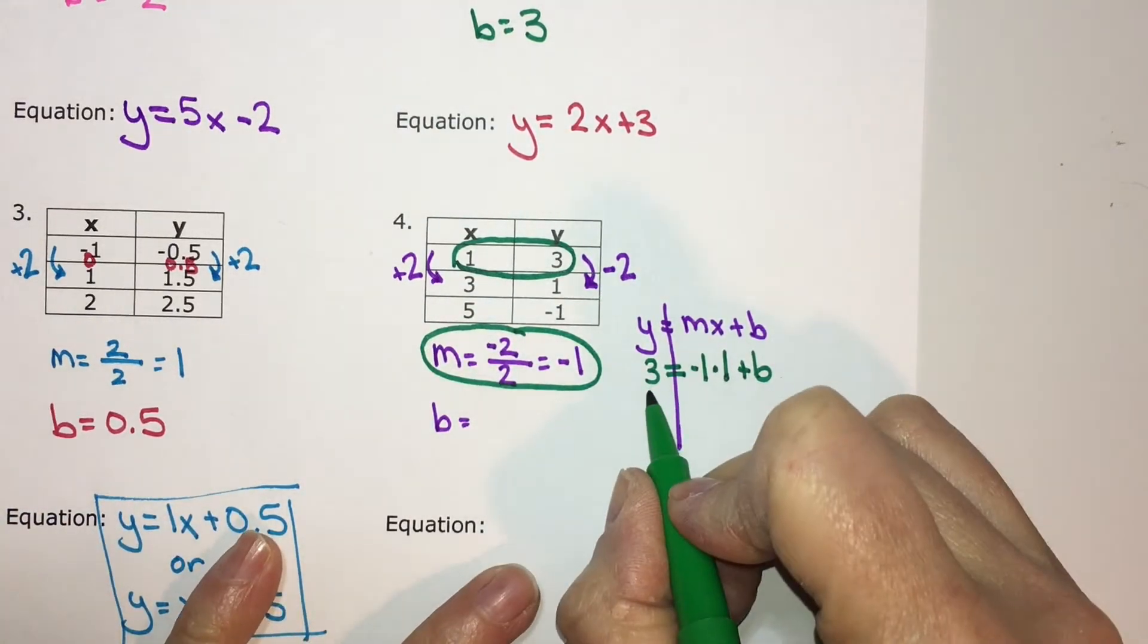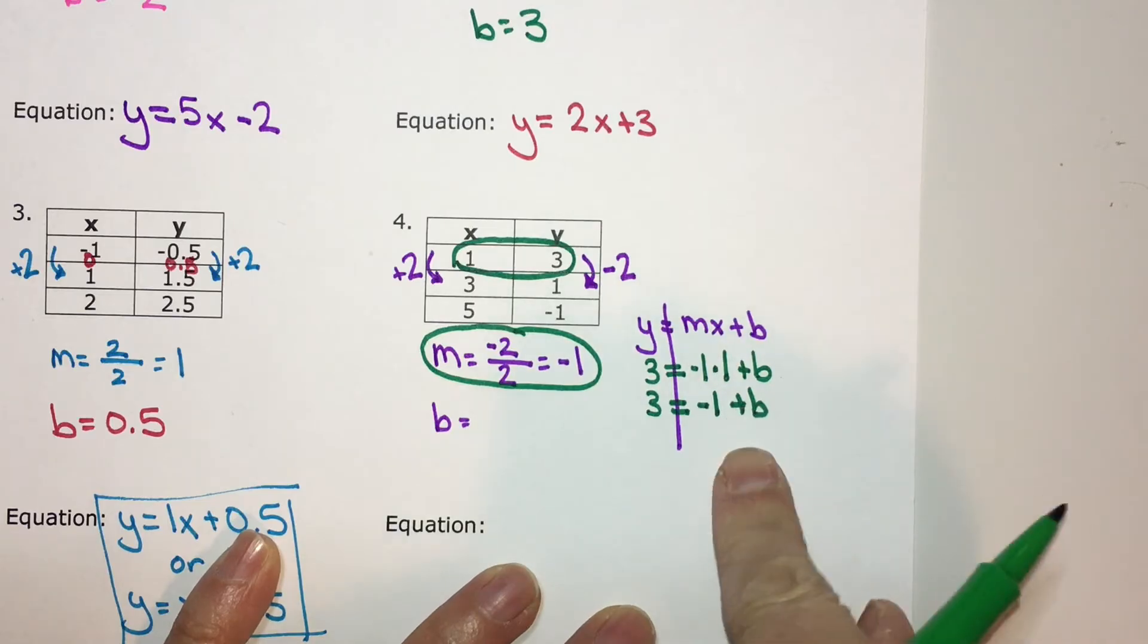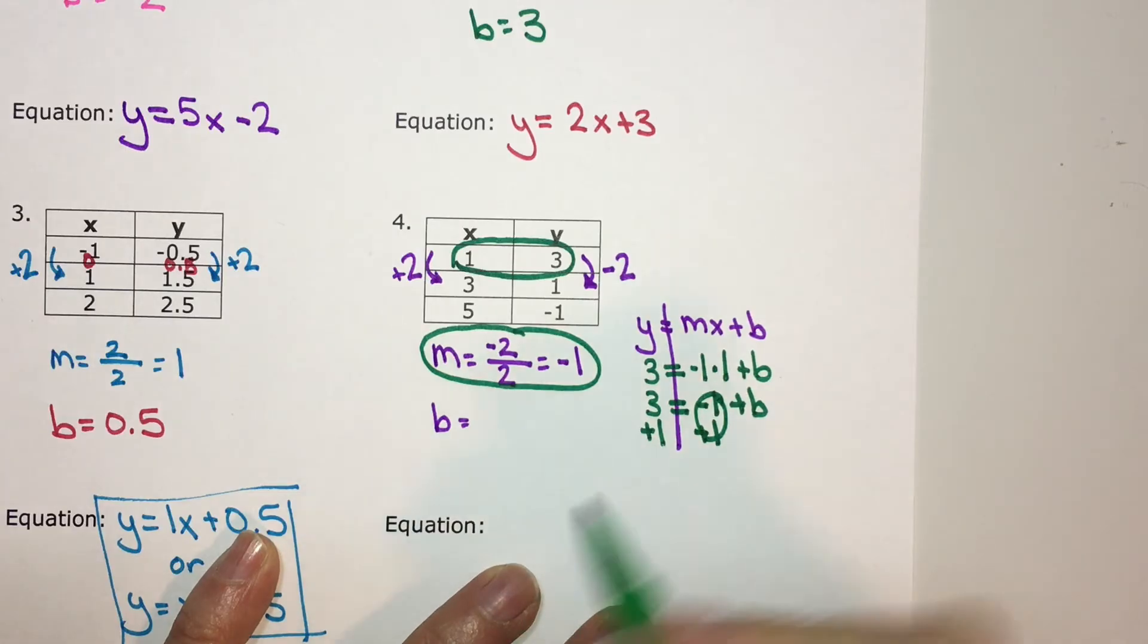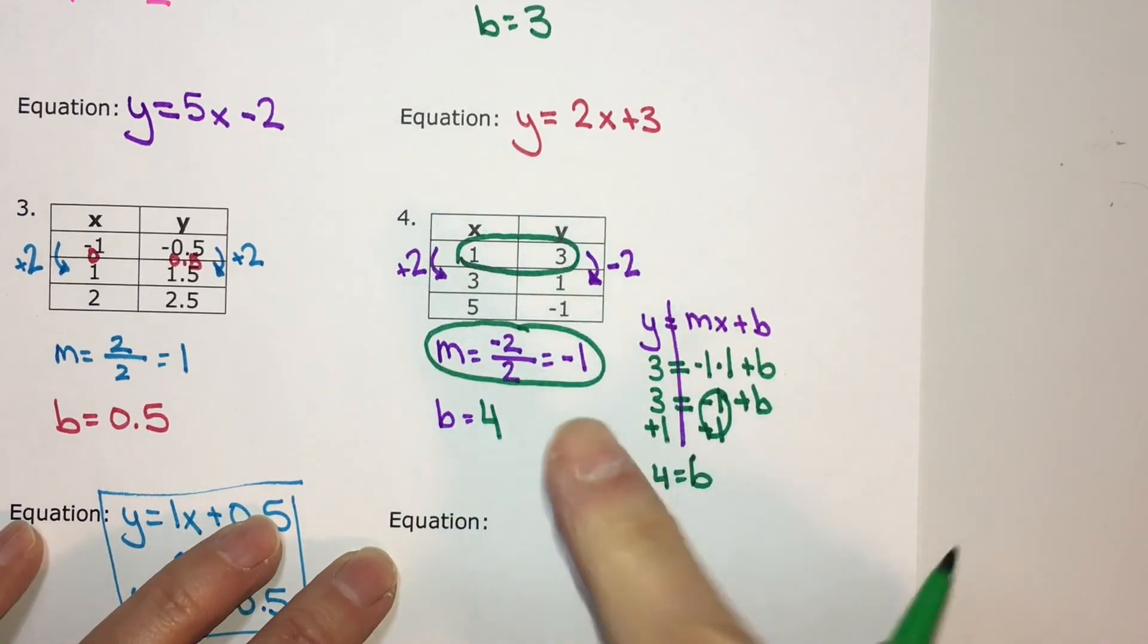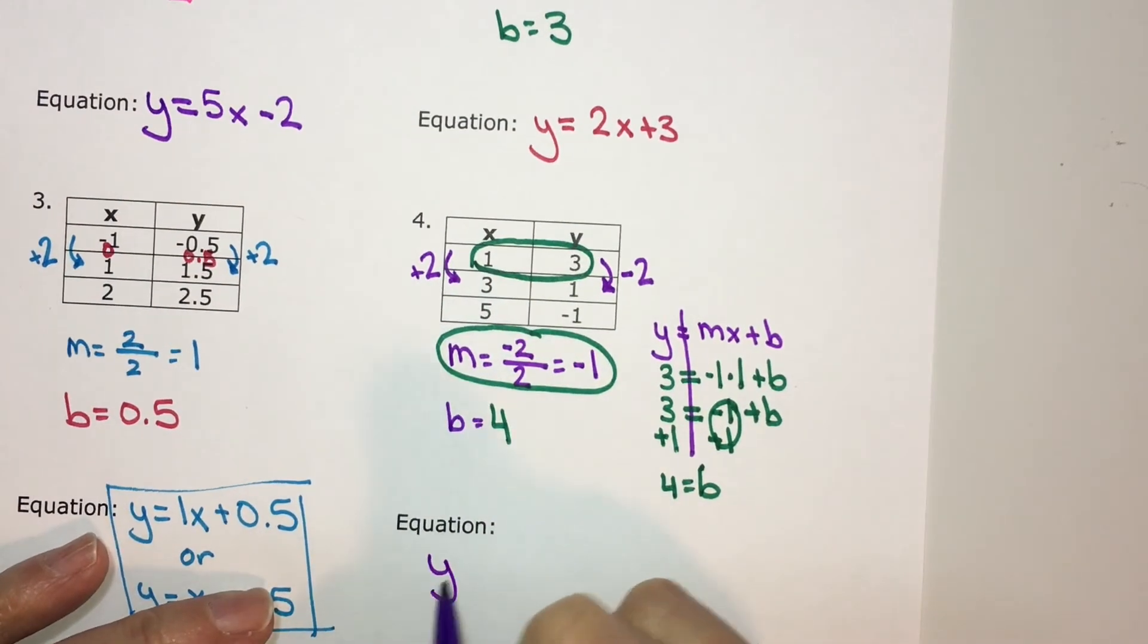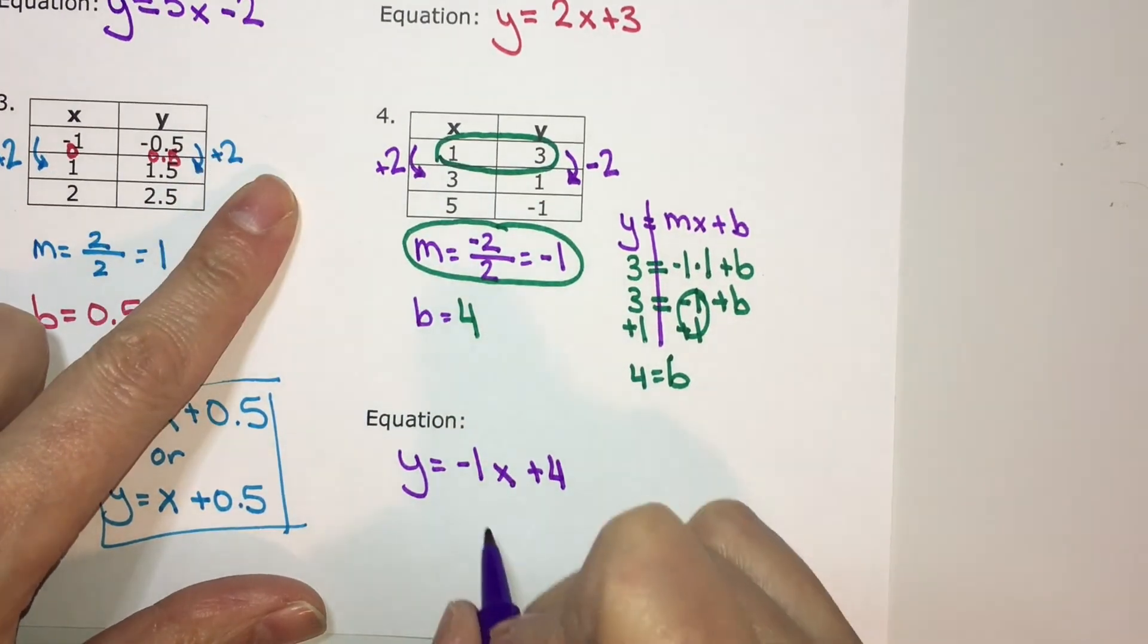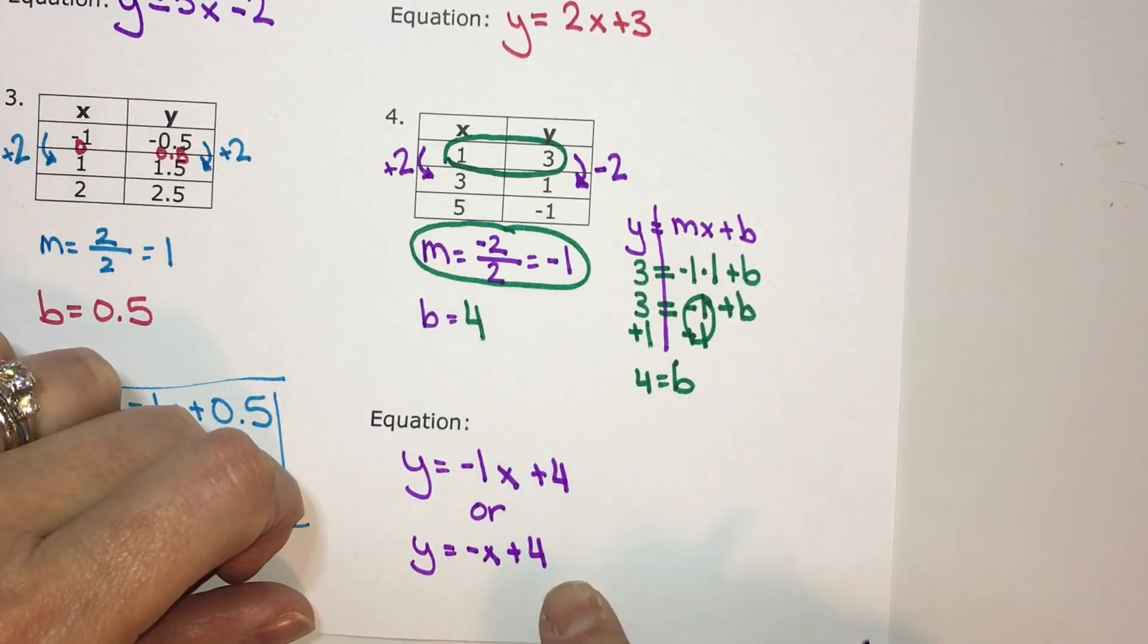I can solve for b. We have 3 equals, I have to simplify this. Negative 1 times positive 1 is negative 1 plus b. To get b by itself, I want to move this negative 1 by doing the opposite, adding 1. But anything you do to one side, do to the other. Negative 1 plus 1 is 0. 3 plus 1 is 4. So b is equal to 4. Now I have the slope and the y-intercept so I can write the equation. It is y equals negative 1x plus 4. But I don't need the 1 in front of the x. Another way of writing this is y equals negative x plus 4. They are the exact same thing.